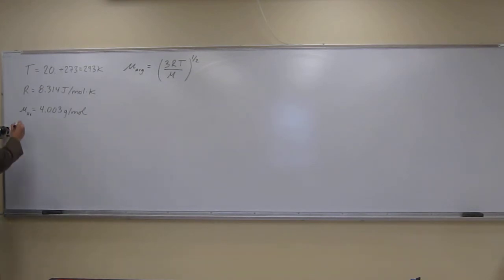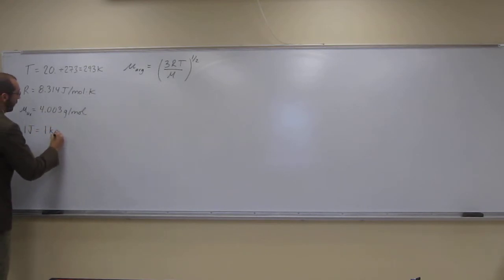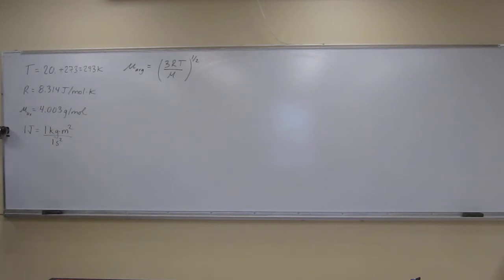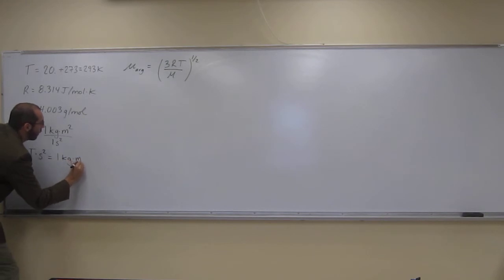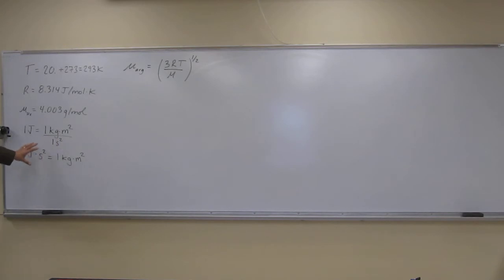Remember, 1 joule equals 1 kilogram meter squared per second squared, like that. So if you want to, let's take that formula here, this conversion factor, and make it just one line on each side. So 1 joule second squared equals 1 kilogram meter squared. It'll be easier to use. So if you see that, just algebraically manipulating that.